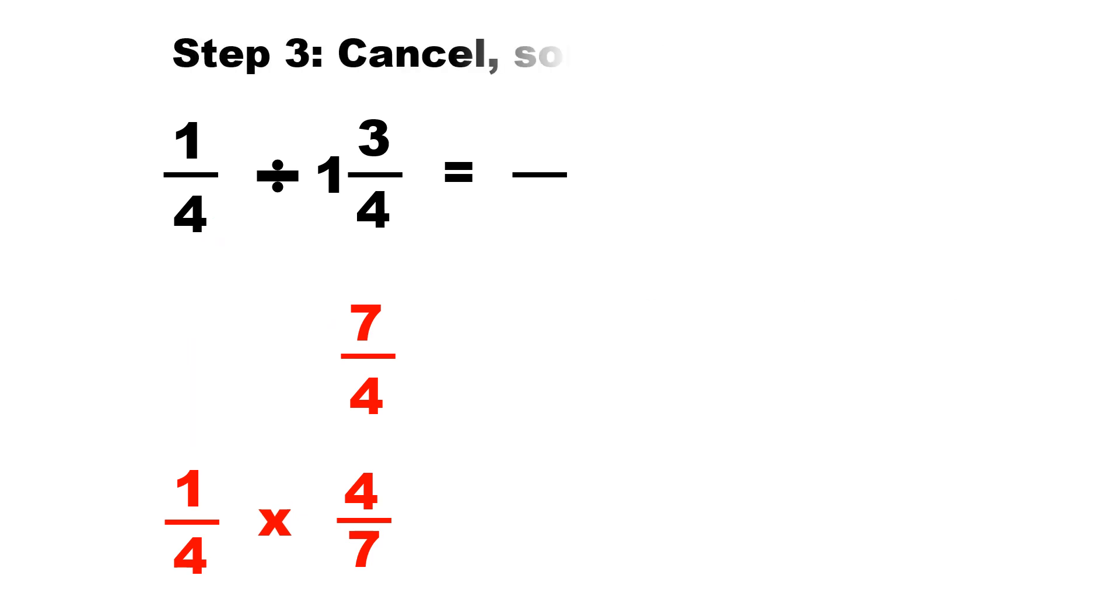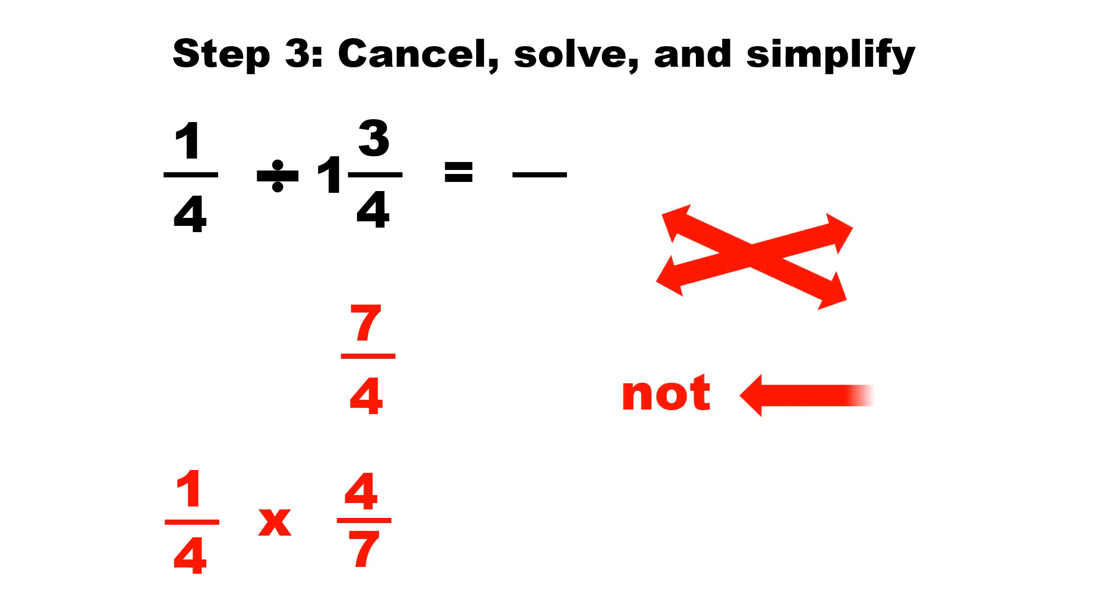Step three is we cancel, solve, and simplify. So we have a fraction one-fourth times four-sevenths. Now we can only cancel diagonally, not straight across, but only diagonally. And we see two fours which are diagonal. We're going to cross them out and make them one. If we reduce four-fourths, it's going to be one. We can't do anything else, meaning cancel or simplify.